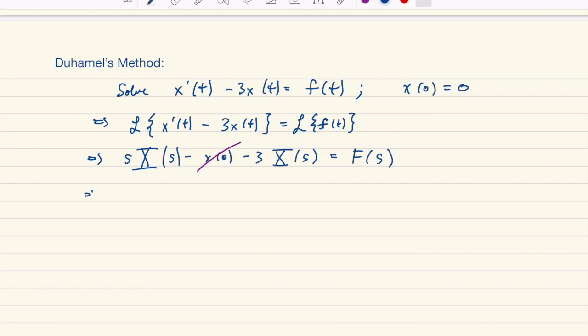So this implies that s minus 3 times capital X of s is equal to capital F. And what we can do then is we can take the s minus 3 term and divide both sides by s minus 3. So we end up with capital X of s equals 1 over s minus 3 times capital F.